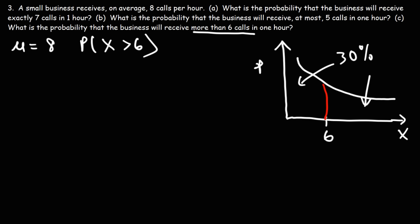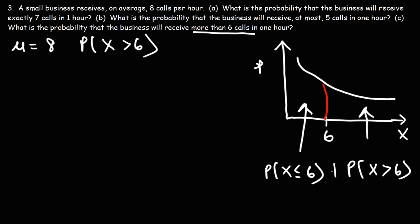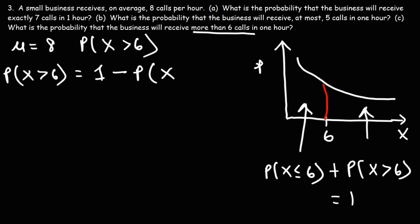The total area under the curve, representing total probability, is 1 or 100%. The left side represents the probability that x is less than or equal to 6, and the right side represents the probability that x is greater than 6. These two must add up to 1. So the probability that x is greater than 6 equals 1 minus the probability that x is less than or equal to 6.